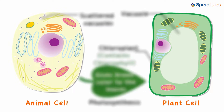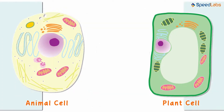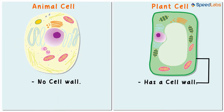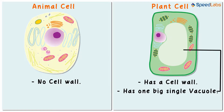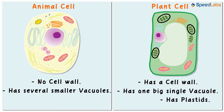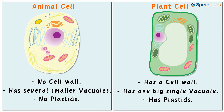Let us review the differences between the plant and the animal cell. The plant cell has a cell wall whereas the animal cell doesn't. The plant cell has one big single vacuole whereas the animal cell has several smaller vacuoles. Lastly, the plant cell has plastids while the animal cell does not.